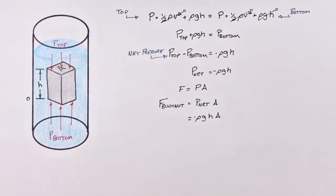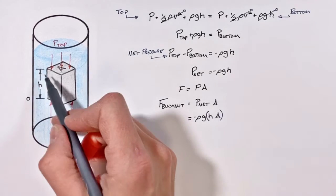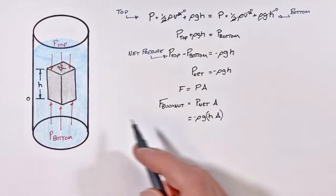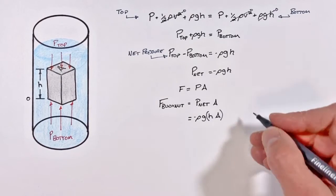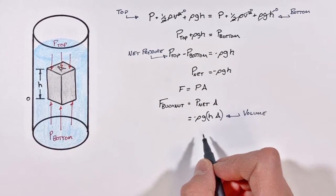Height multiplied by area. The height of the block multiplied by the area of this block is in fact the volume of the block, and this is going to leave us with our final expression for the buoyant force.